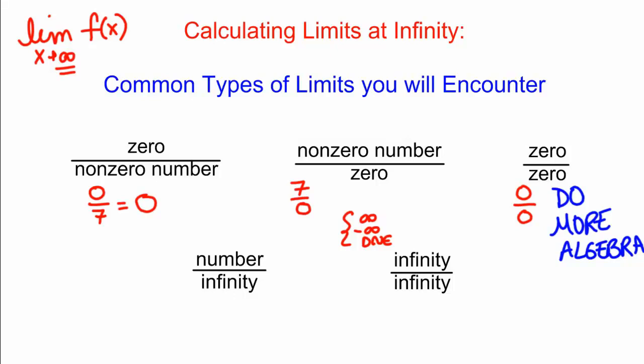If you run into a number divided by infinity, something like 7 over infinity — which is not itself a number, but this is just a form of an answer — this is always going to give you 0, because if you divide a fixed number by bigger and bigger values, it gets closer and closer to 0. This is true even if it's negative infinity that you're dividing by.